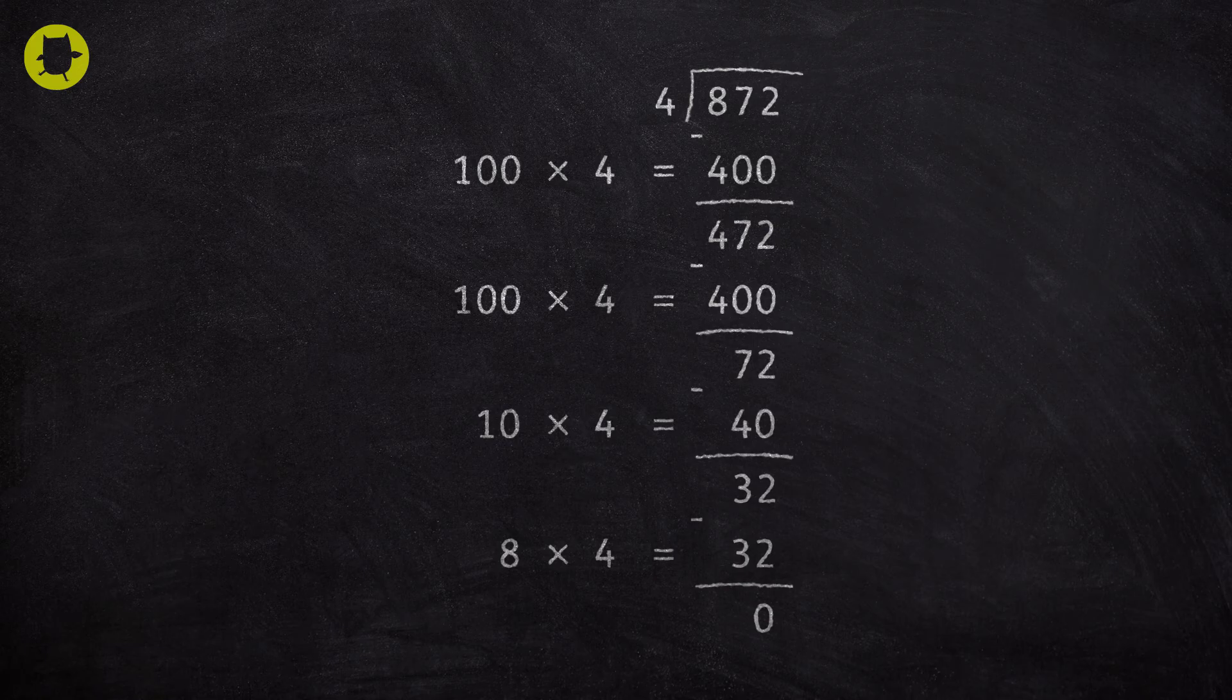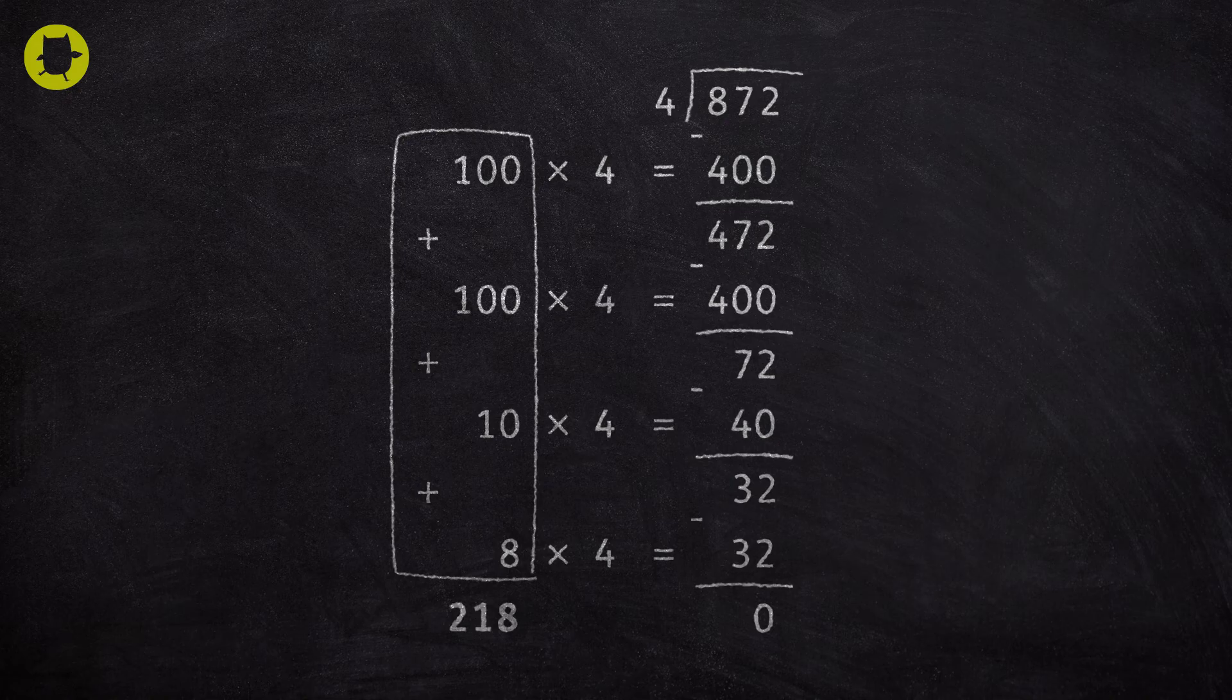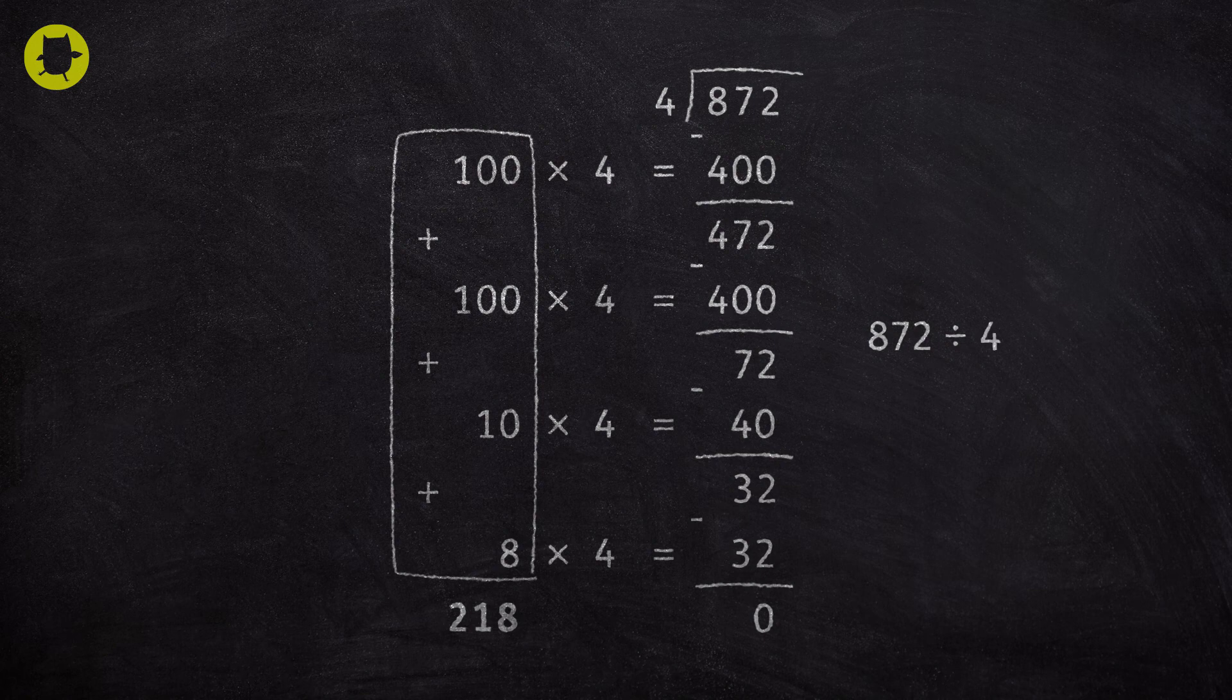Finally, we add up all the numbers that we multiplied 4 by. So 100 add 100 add 10 add 8 is 218. So the answer to 872 divided by 4 is 218.